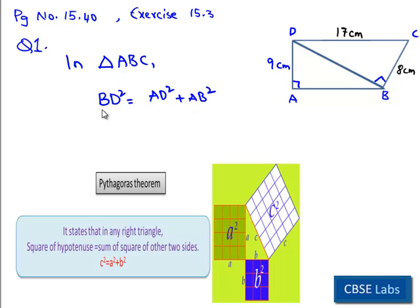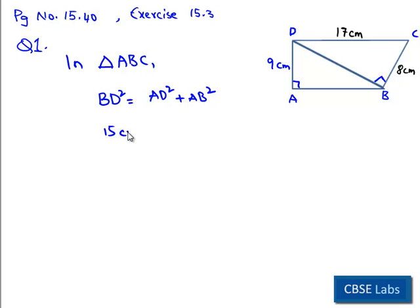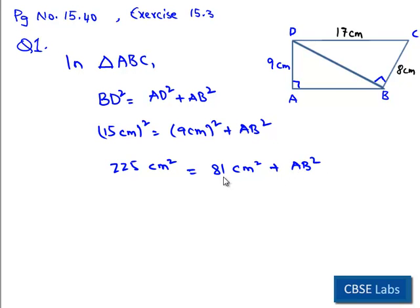Now we got BD in our previous problem, which is 15 centimeters. So here we have 15 centimeters square, and then we have AD square. AD is 9 centimeters square, then AB square is unknown. 15 square is 225 centimeters square, and 9 square is 81 centimeters square. On transposing 81 centimeters square to left hand side...